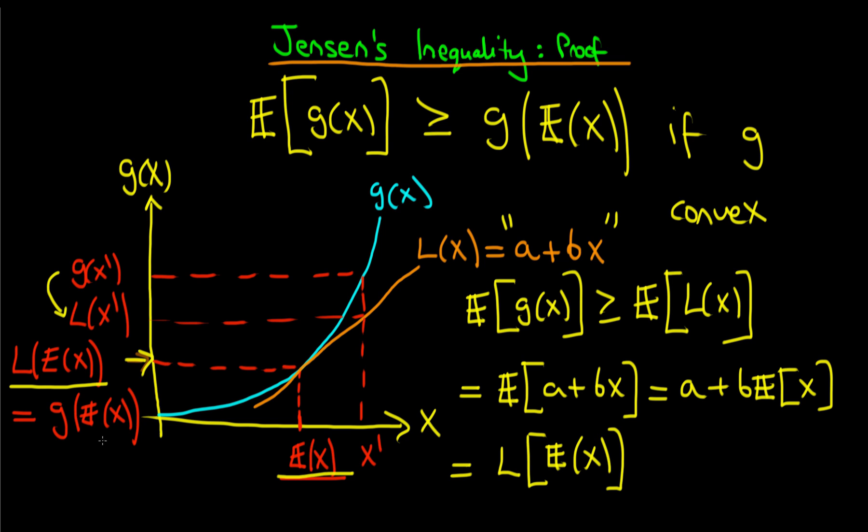And finally, we know that L of the expected value of x is just equal to g of the expected value of x. And hence, we find our final form, which is g of the expected value of x. And we note that we have proved here that the expected value of g(x) is always greater than or equal to g of the expected value of x. And hence, we've proved Jensen's inequality.